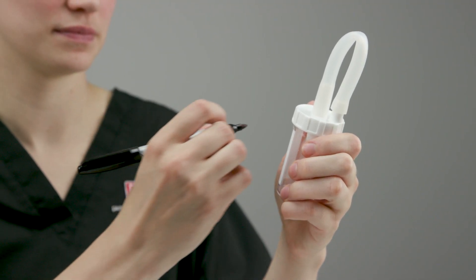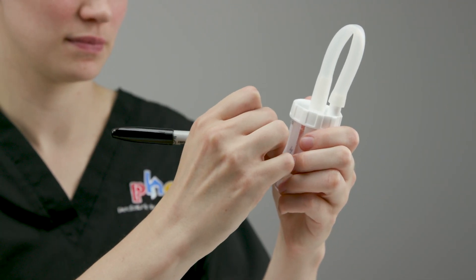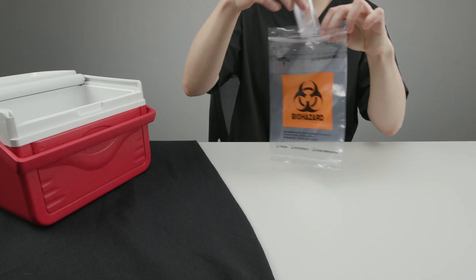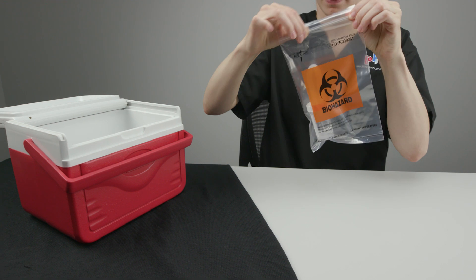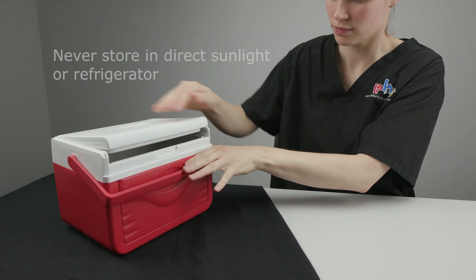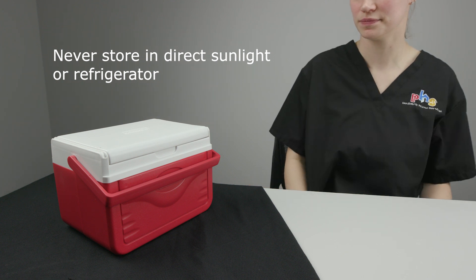Label the specimen container with the information your laboratory requires. Send the sample to the lab as soon as possible. Store the sample at room temperature before and during transport. Never store the sample in direct sunlight or in the refrigerator.